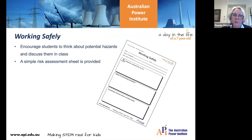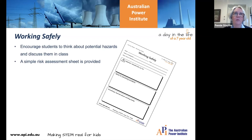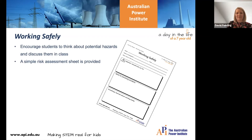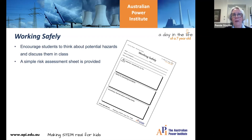Hazards are the things students should look out for, along with ideas for preventing accidents and what they can learn about working safely. Even simple things such as spilt water on the floor could be a hazard if it's not managed properly. Students can be encouraged to think about what sort of accident that could cause and how it could be managed so it's no longer a hazard. Getting students to use this risk assessment and think carefully about hazards and hazard prevention is really good science practice.